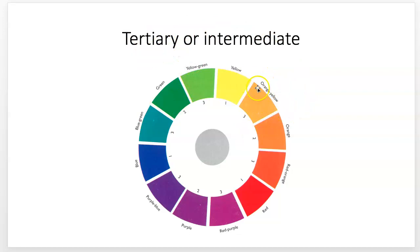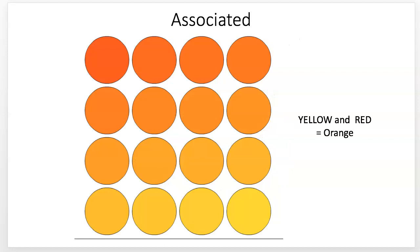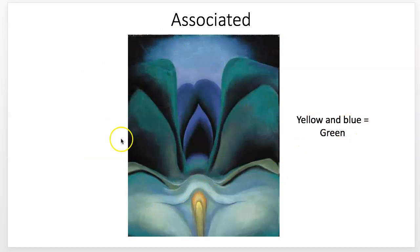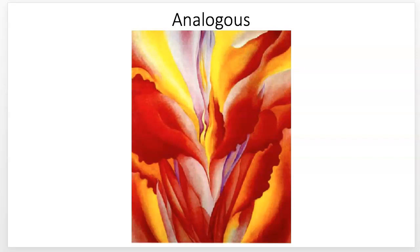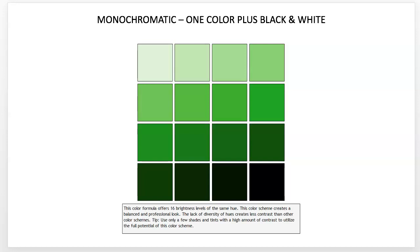Tertiary or intermediate colors are between a primary and secondary — for example, yellow-green. Analogous colors are those associated next to each other on the color wheel — yellow and blue make green, and these sit beside each other. You can make a whole composition from yellow, green, and blue and it feels very unified. These feel unified because they're all warm or all cool.